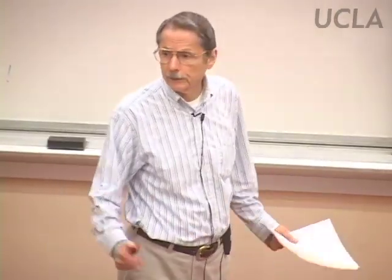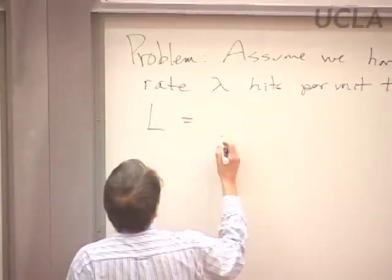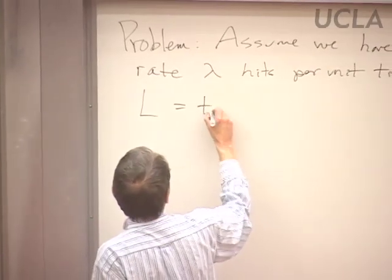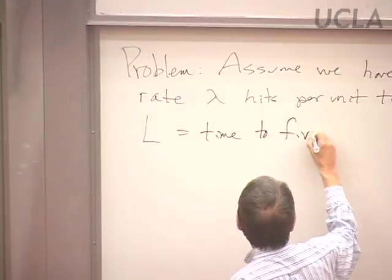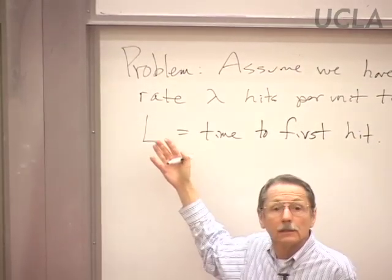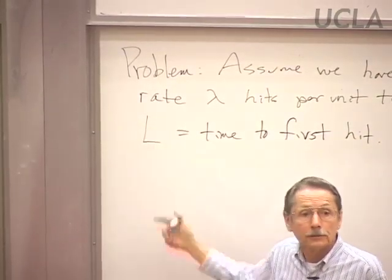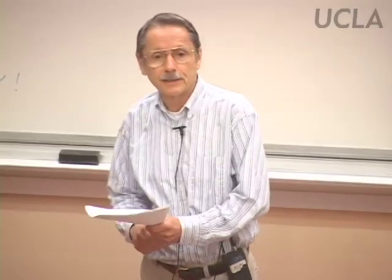Let's look at a different random variable. L is the time to the first hit — the waiting time to that first hit. We use the letter L to stand for lifetime because in the applications, that first hit may be fatal. So there's no second hit in that case.